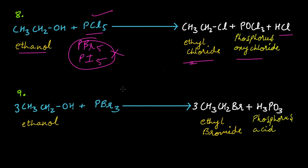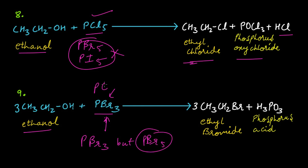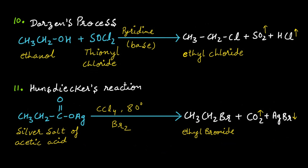The ninth method: when ethanol is treated with PBr₃, we are using three halogen atoms — PBr₃ is stable but PBr₅ is not. In place of PBr₃ you can use PCl₃. When three molecules of ethanol are treated with PBr₃, you will get ethyl bromide and phosphorous acid. Remember: PBr₅ and PI₅ are not stable, but PBr₃ is stable.